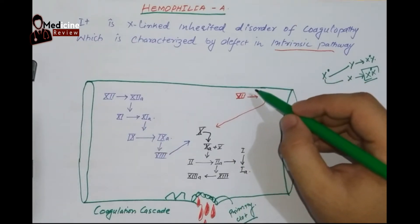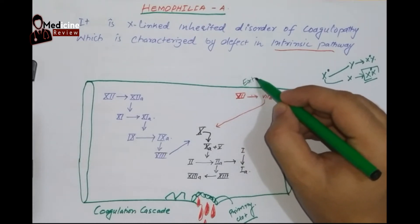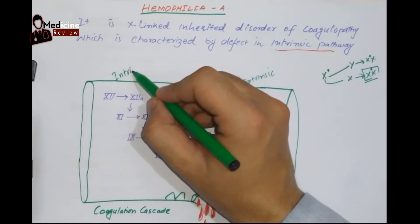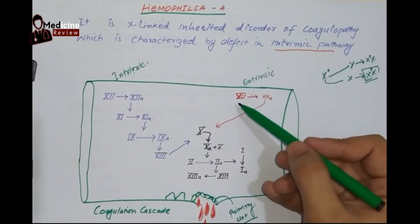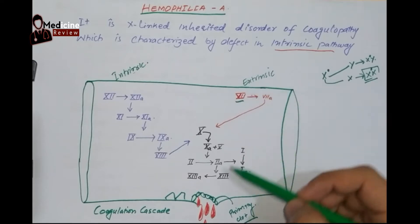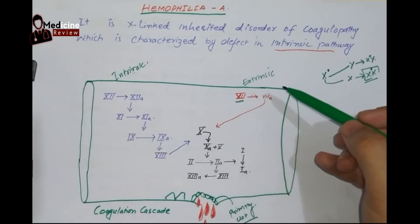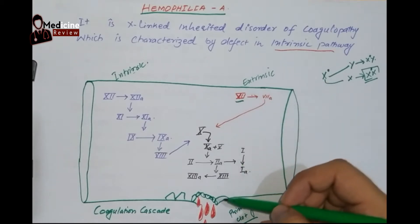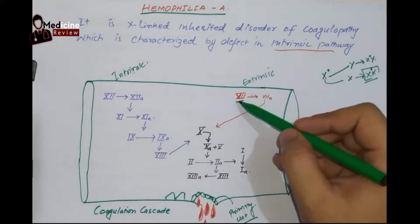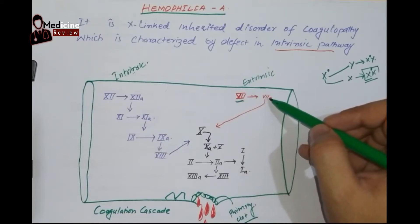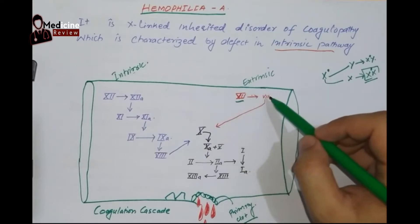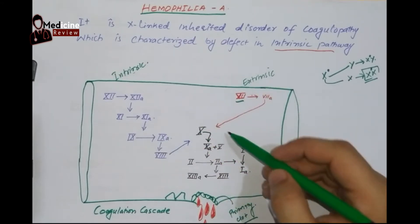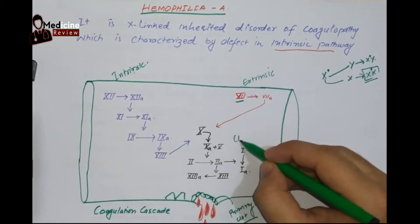One pathway is called the extrinsic pathway and another is called the intrinsic pathway. The extrinsic pathway is started by factor 7. Whenever the tissue factor is exposed, all of these factors — initially they are inactivated — but whenever the tissue factor is exposed, factor 7 becomes activated. The pathway denoted by black color is called the common pathway.